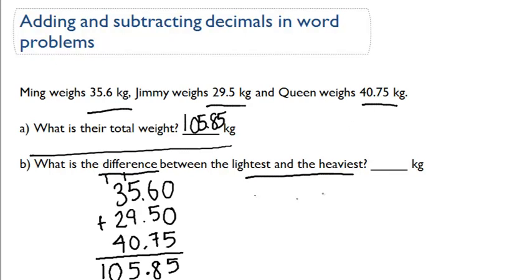Okay, so the heaviest person is Queen, weighing in at 40.75 kilograms. And the lightest is Jimmy, weighing in at 29.5 kilograms. So to figure out the difference, we're going to need to do some subtraction.